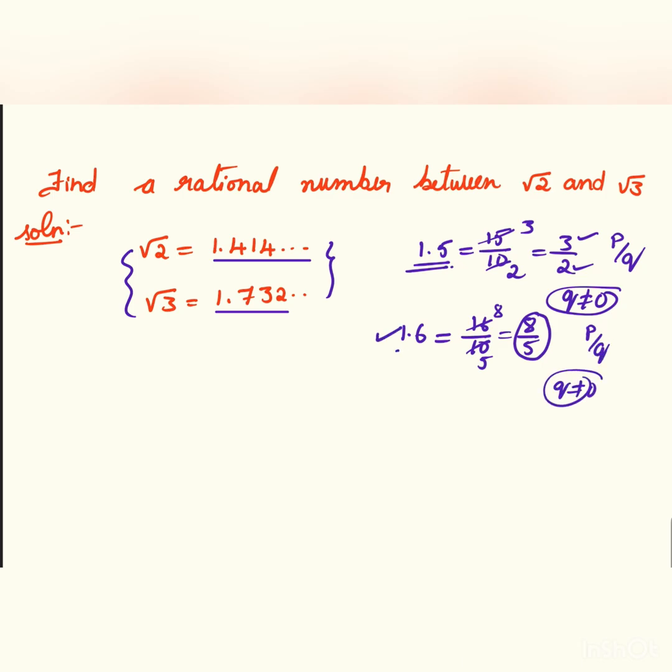So our answer can also be 1.6. And if I take 1.7, 1.7 can also be written as 17 by 10, which is in the form of p by q where 17 and 10 are integers and q is not equal to 0. Like 1.5 or 1.6 or 1.7 can be the answer for the rational number between root 2 and root 3.